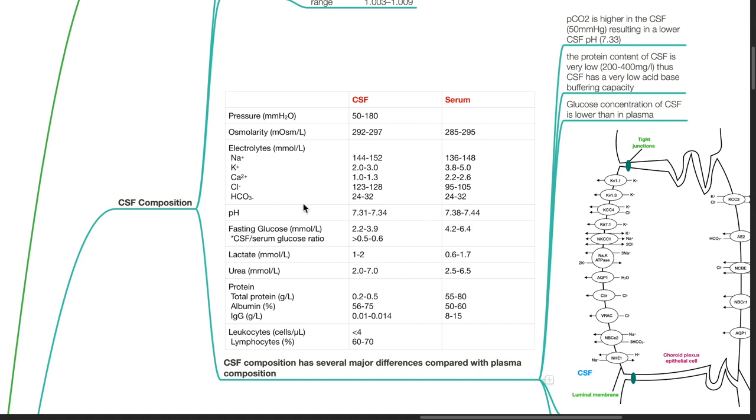In a fasting patient, CSF glucose is 2.2 to 3.9 mOsm per liter, while serum glucose is 4.2 to 6.4 mOsm per liter. CSF to serum glucose ratio is normally more than 0.5 to 0.6.